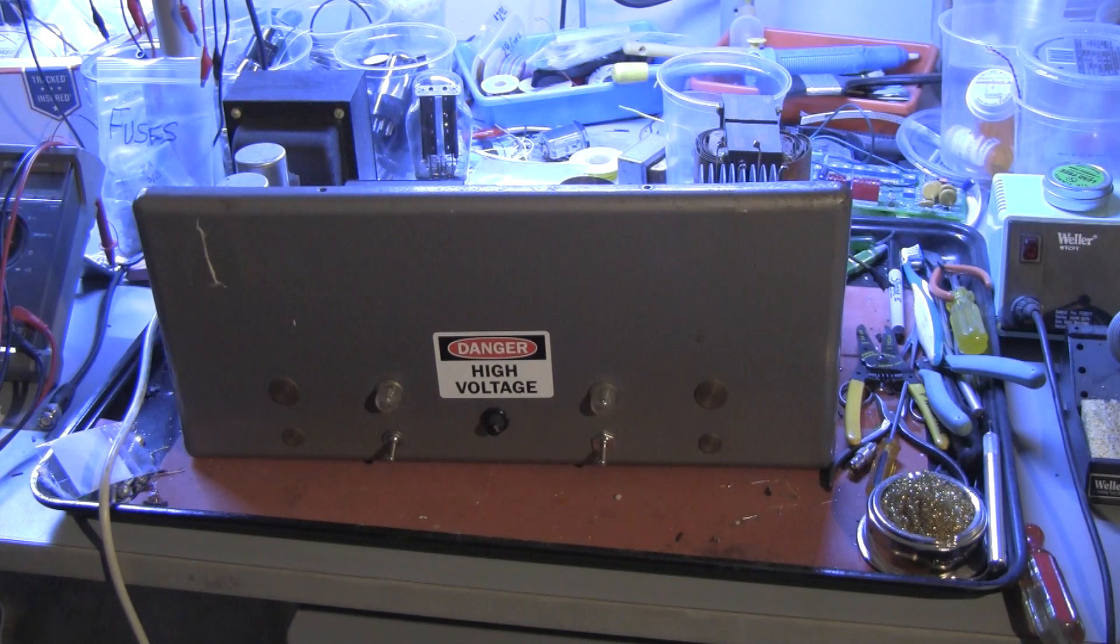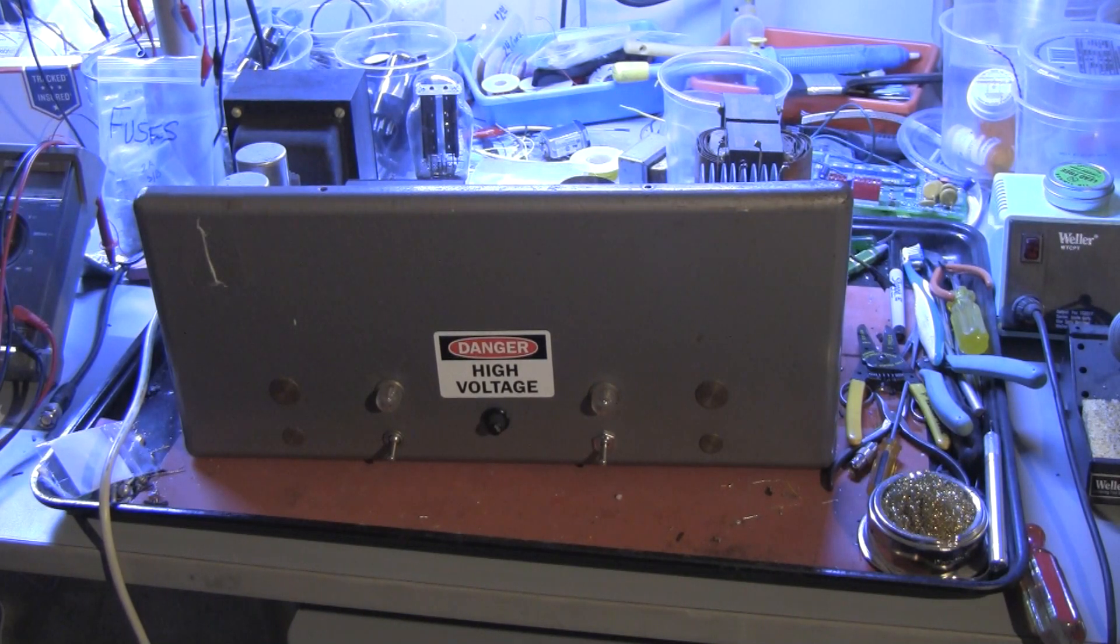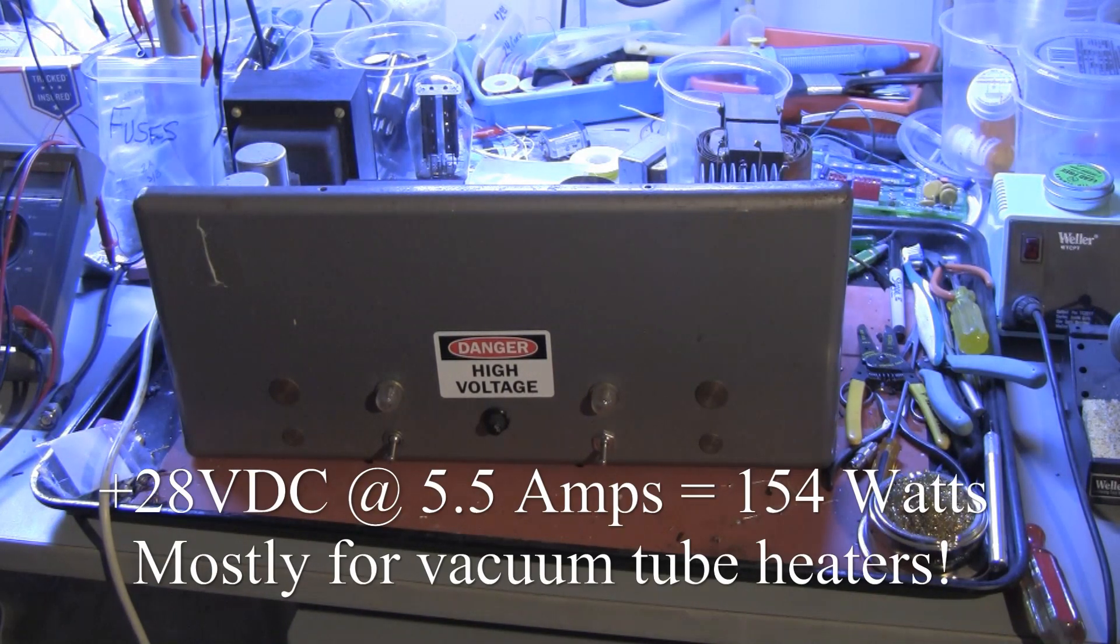It produces three required voltages used by the Iconoscope camera. The first is called A+, and it's 28 volts DC at 5.5 amps. That's a total of 154 watts of power on the 28 volt power supply.